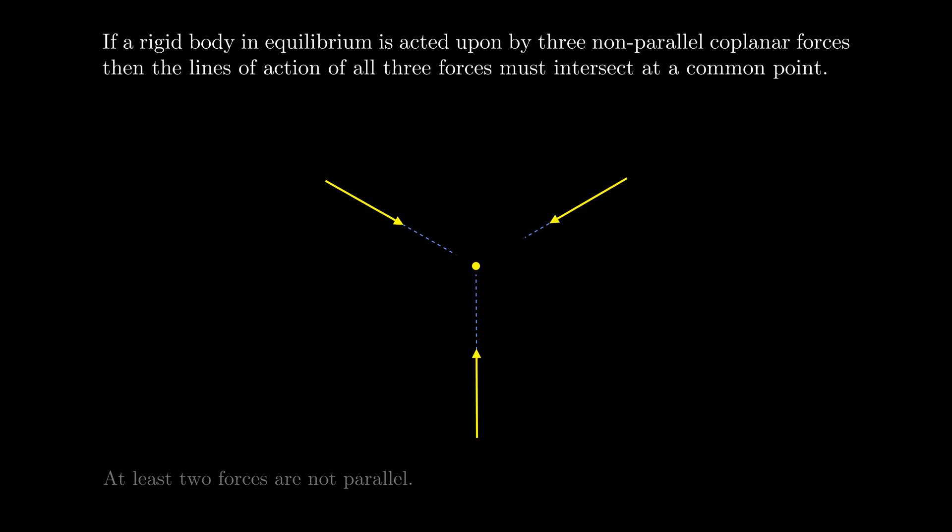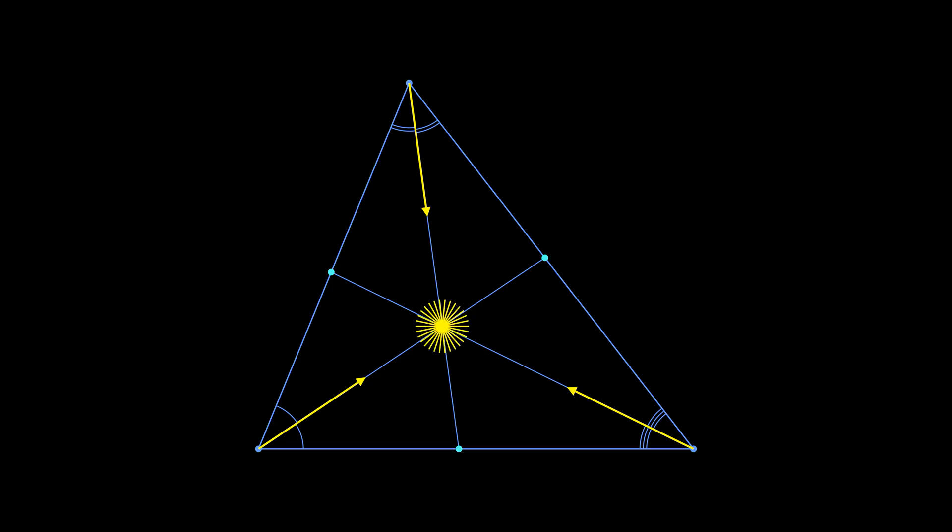For example, you already know that the three angle bisectors of a triangle intersect at a single point. But how can we explain it in terms of physics? Imagine that the triangle is a rigid body and three people are vainly trying to move it. We need to find three vectors directed along the bisectors so that their sum would be zero. How can we guess it beforehand for any given triangle? It's very simple.